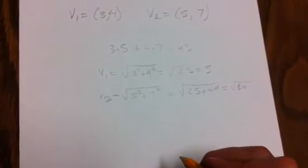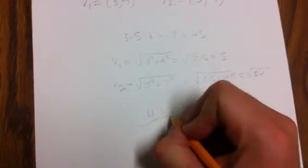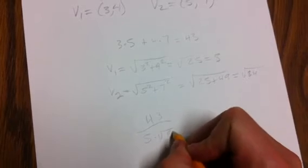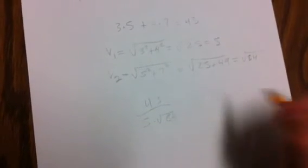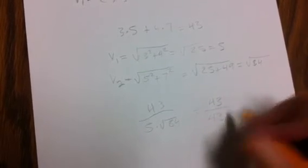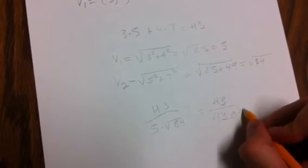Okay, so now we'll put this all together: 43 over 5 times the square root of 84, which is equal to 43 over 43.011.